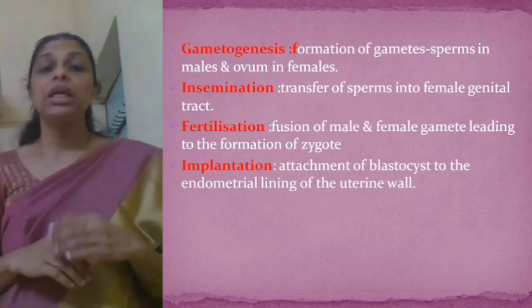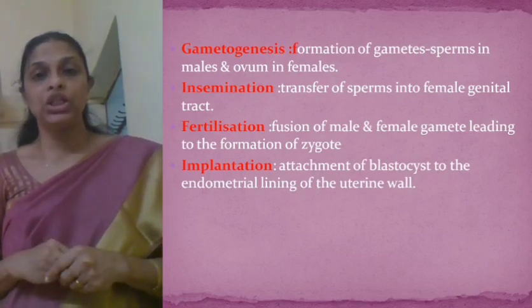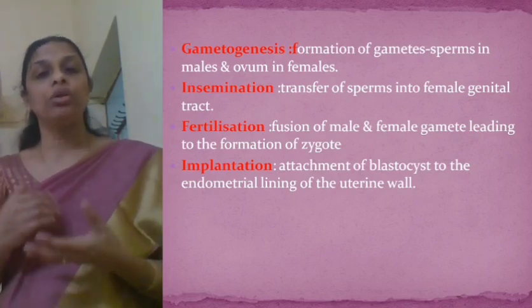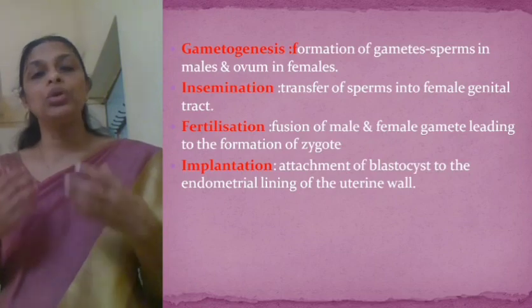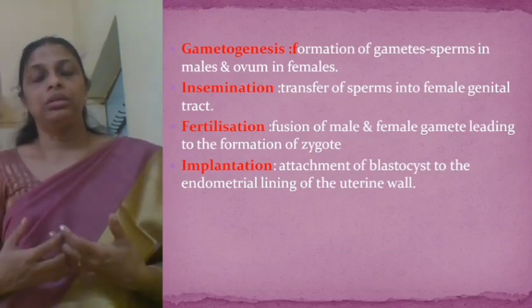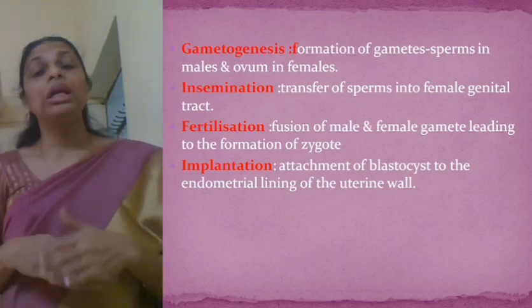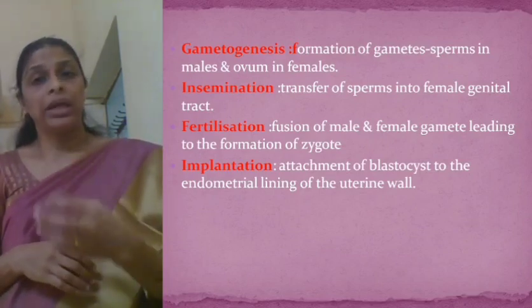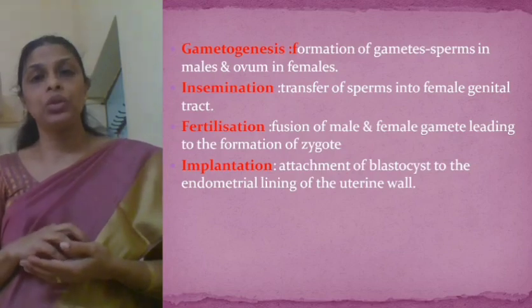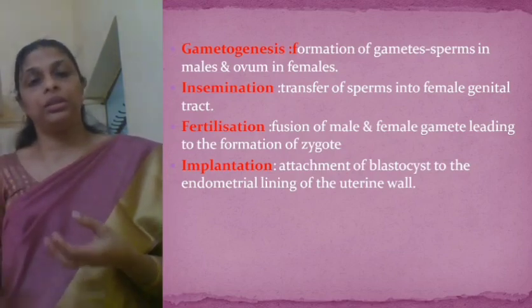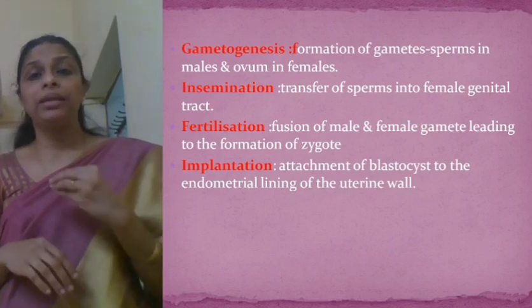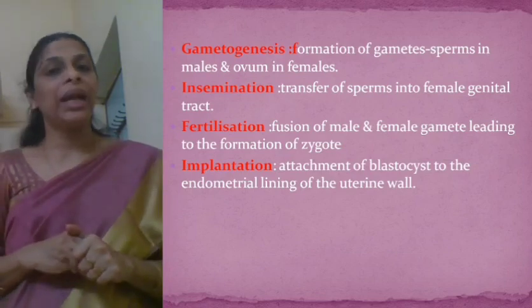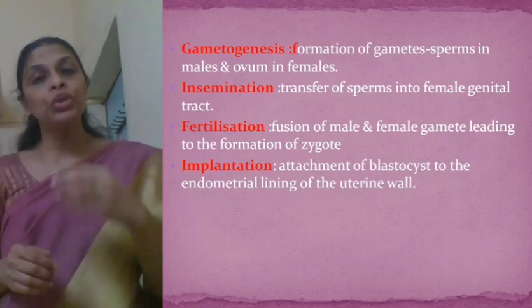The fourth major event is implantation. After the formation of the zygote, it starts dividing, resulting in the formation of an embryo. The embryo undergoes division and differentiation, forming the first embryonic stage called the blastocyst. The attachment of this blastocyst to the uterine wall of the female is called implantation.